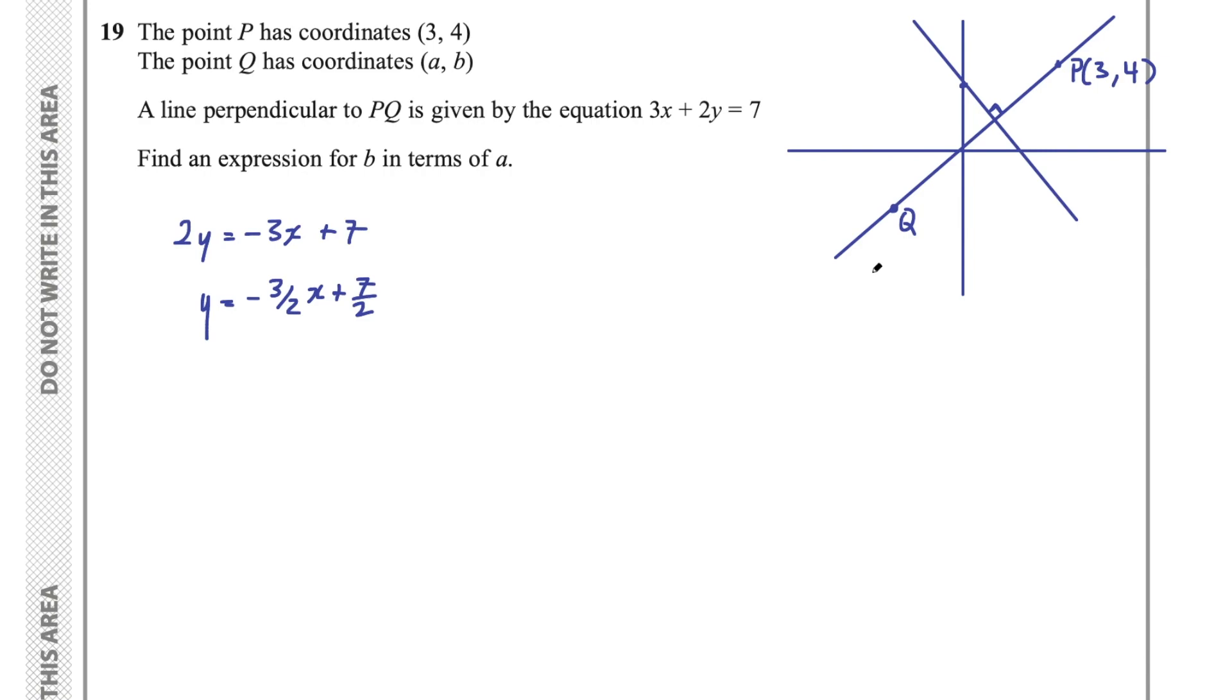Remember, perpendicular lines have gradients that are negative reciprocals of each other. So we know the gradient of PQ then, so let's go ahead and write that down. This will be the negative reciprocal of negative 3 on 2, so that negative becomes a positive, and we flip those numbers around. So this is going to be 2 on 3.